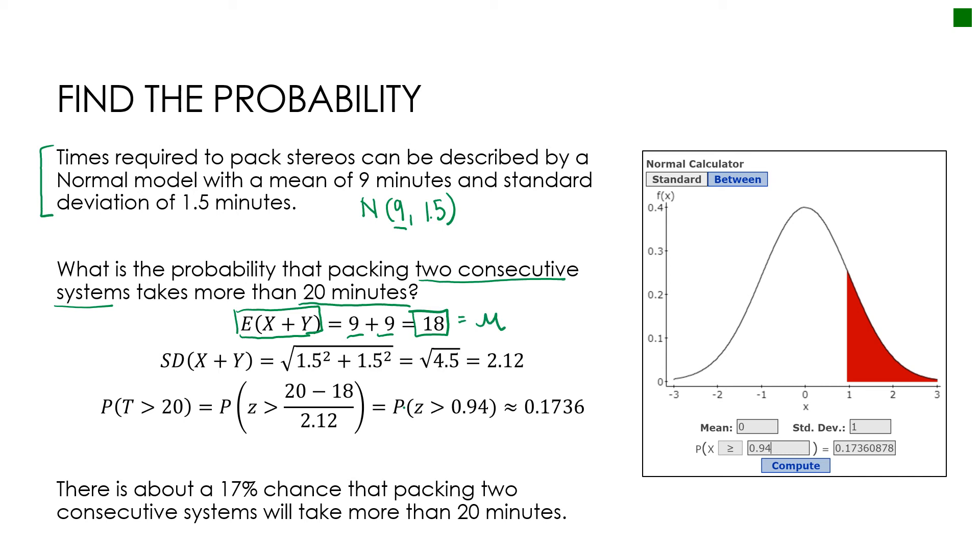Then if I want the standard deviation, I know I can't just go adding 1.5. I need to square those numbers to turn them into variances, add them together, and then take the square root to turn it into the standard deviation. Then I'm going to go ahead and find the Z-score. And so my Z-score is my observed of 20 minutes minus my expected of 18 minutes divided by my standard deviation of 2.12.